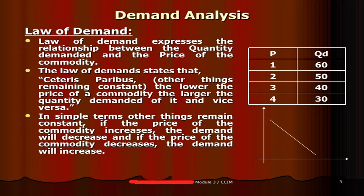Look at the table shown on the right side. That table clearly shows that when the price increases from 1 rupee to 4 rupees, the demand decreases from 60 kg to 30 kg. At the same time, when the price decreases from 4 rupees to 1 rupee, the demand increases from 30 to 60.